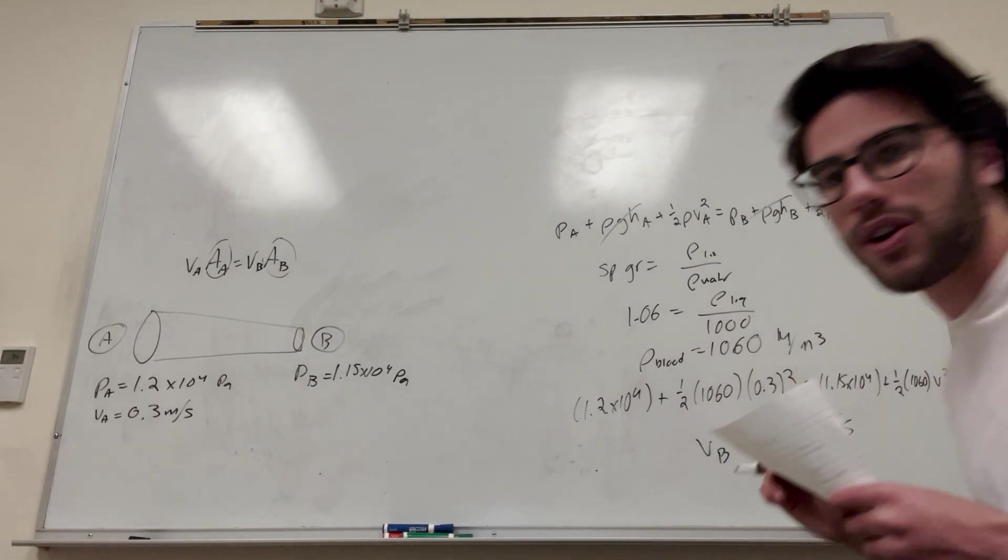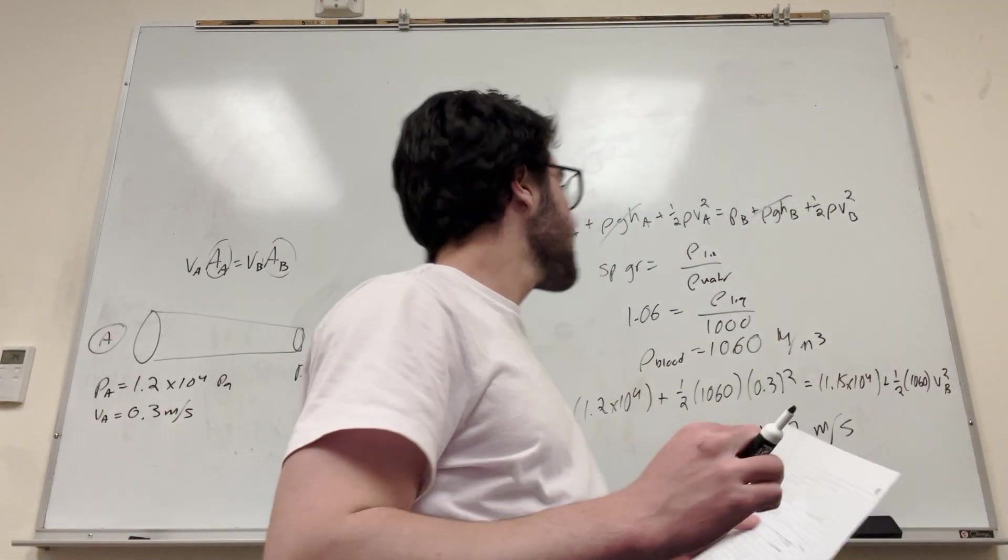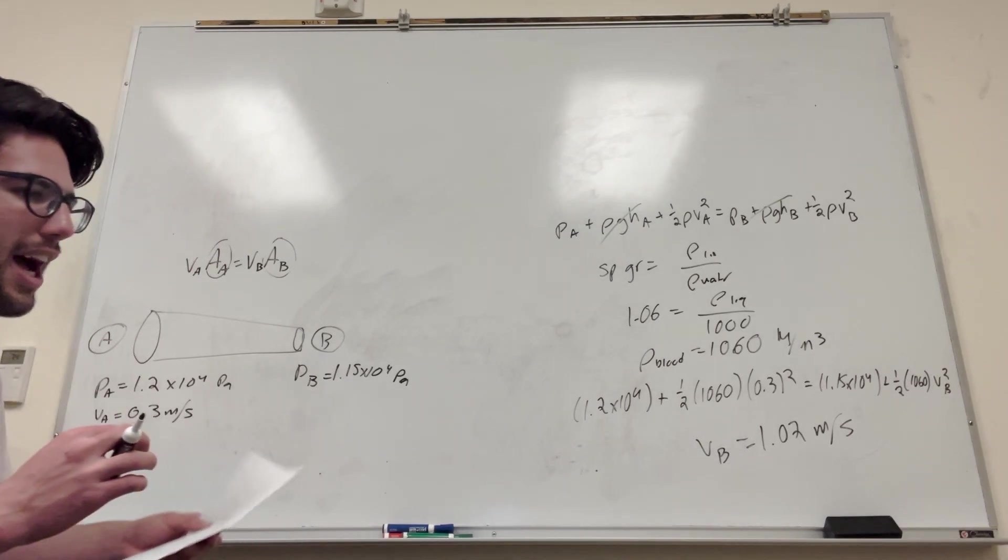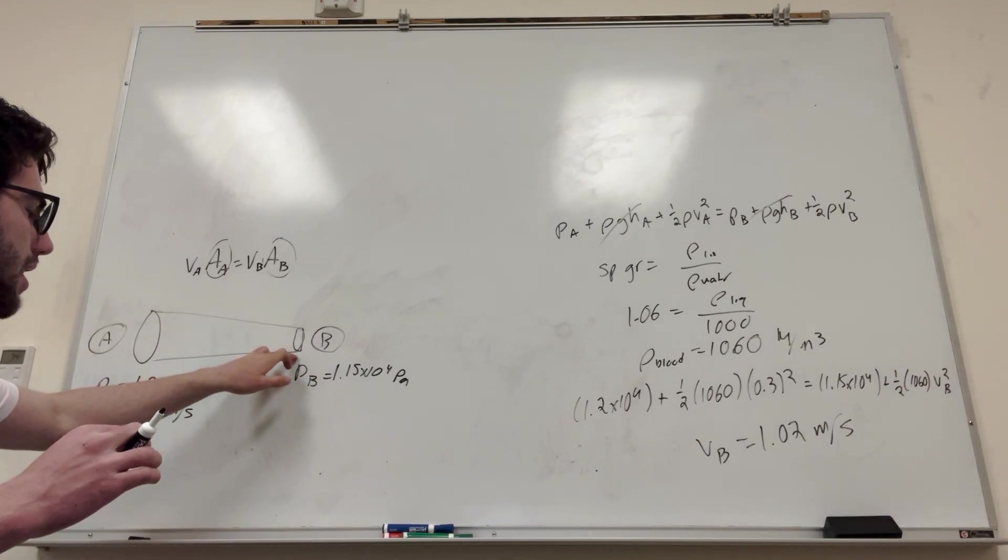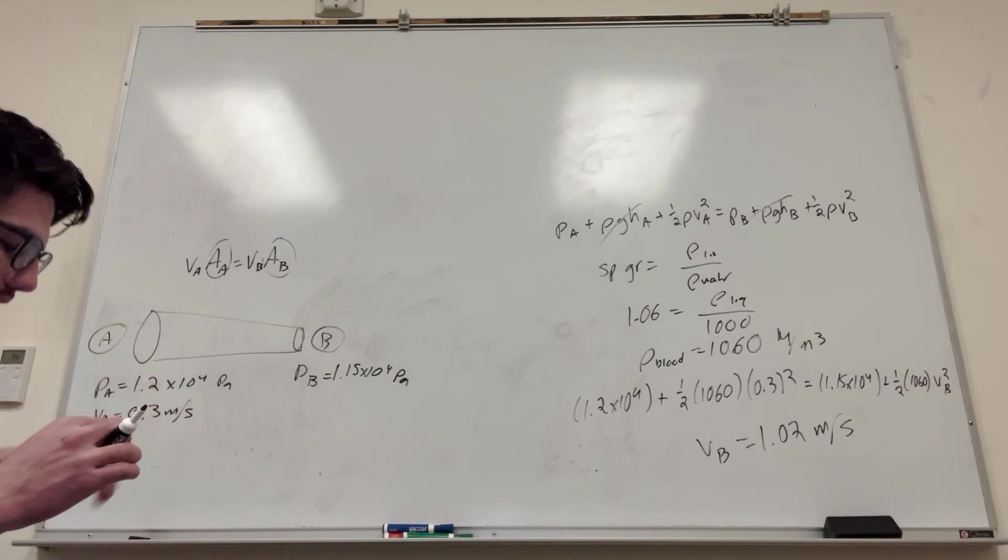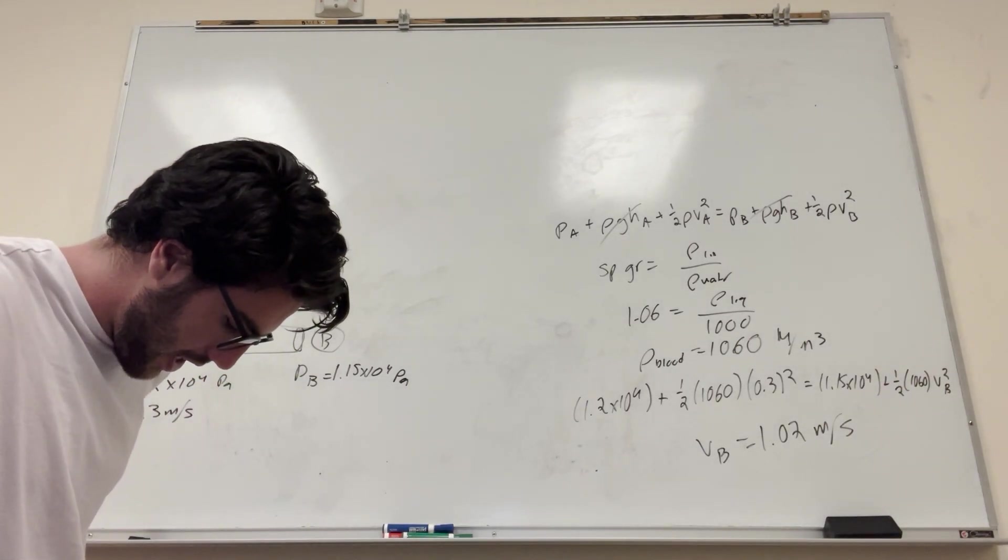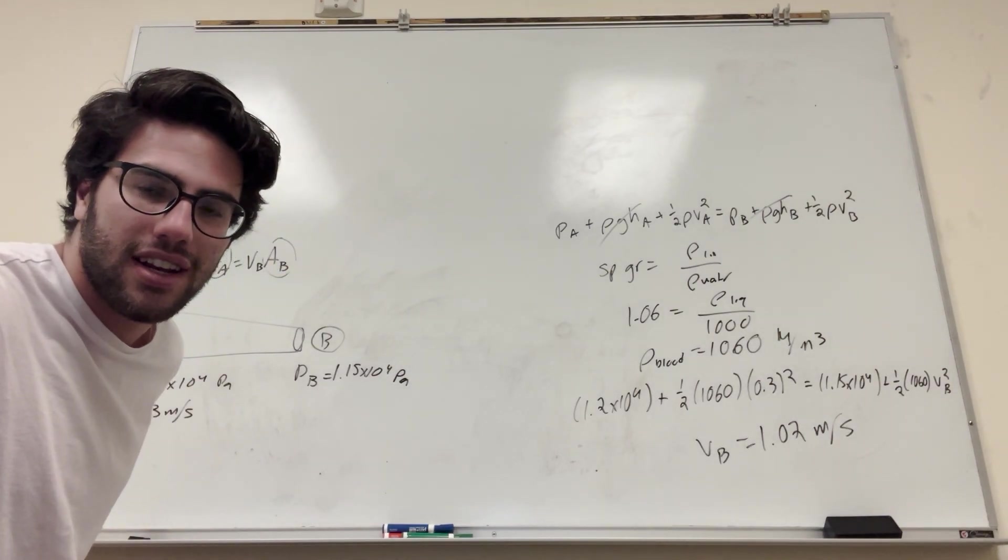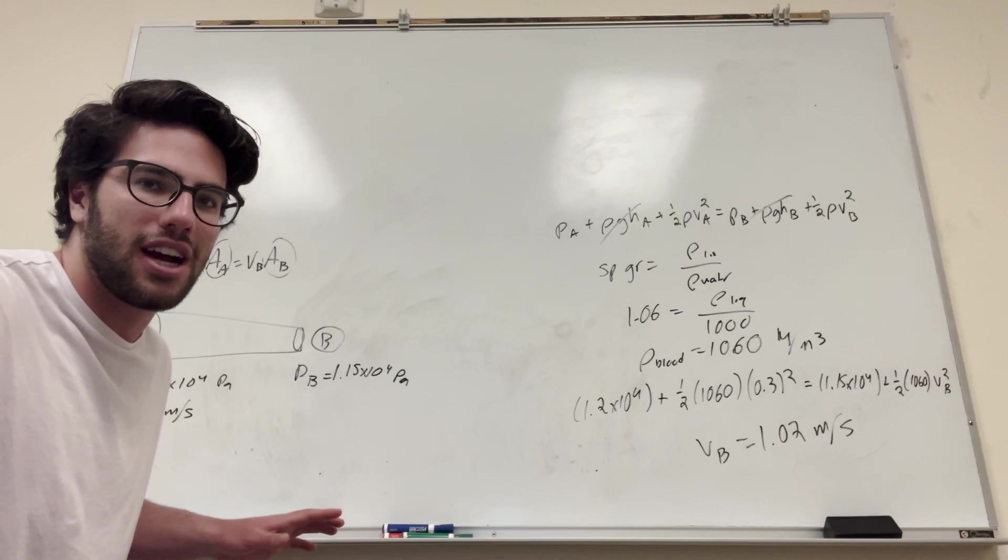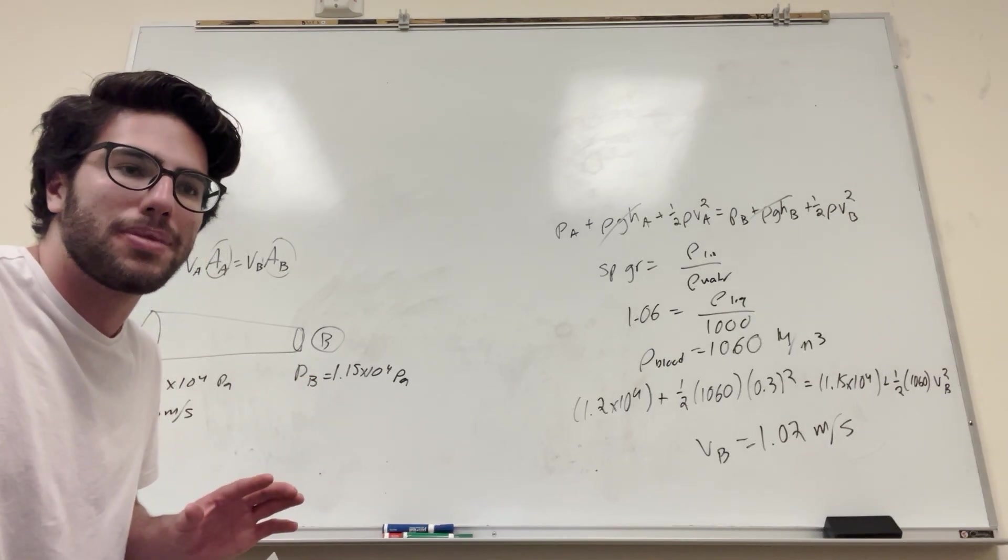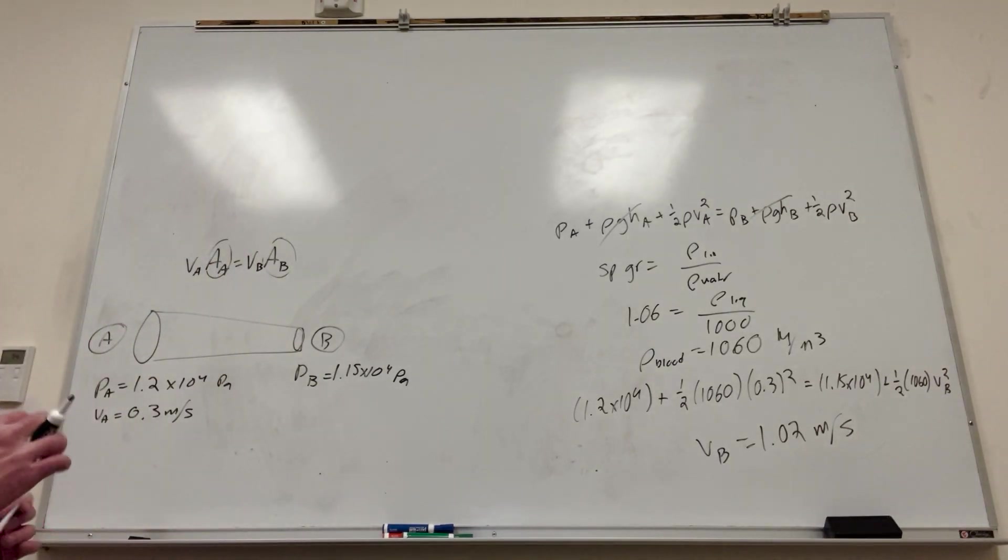And then we can go back to our equation that we wrote here earlier. Let's do it. So we're trying to find how much is blocked. So we're trying to find the area of B over the area of A. If you take area of B over area of A, you're going to get a fraction. And that's going to give you how much of the area is left over, basically.